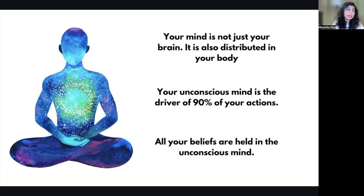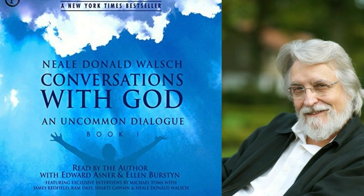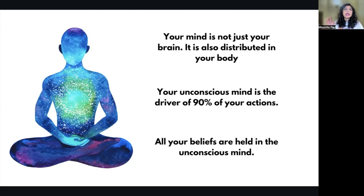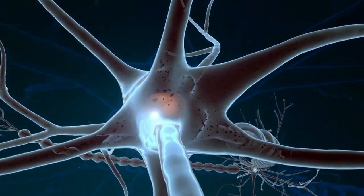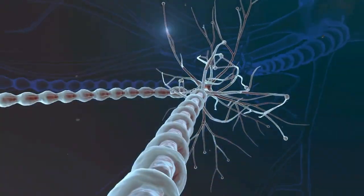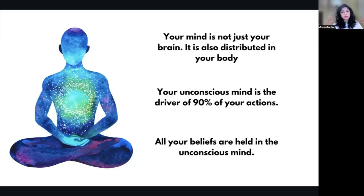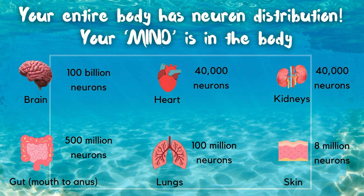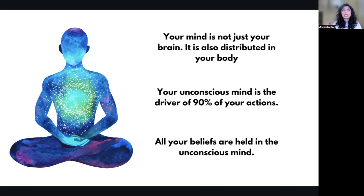This concept first came to me in the book by Neale Donald Walsch, 'Conversations with God,' and my mind was blown. I then did extensive research and found that the entire mind is basically a function of neurons, and each organ has its own set of neurons — which I covered in one of my past videos on limiting beliefs. The neurons are distributed all throughout your body, and so is your mind. So your conscious and unconscious mind is not just in your brain but in your body. Your emotions and negative thoughts not only influence your brain and mood but also other organs in the body, because they are all interconnected.